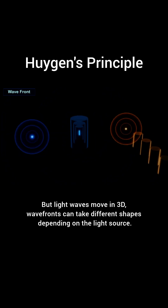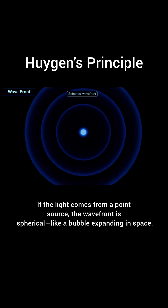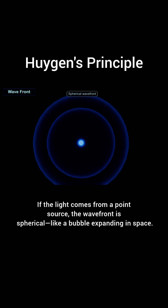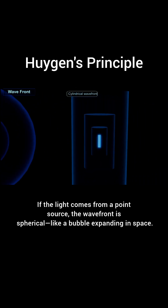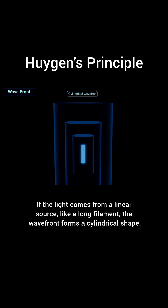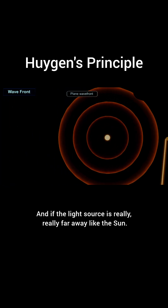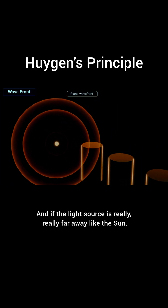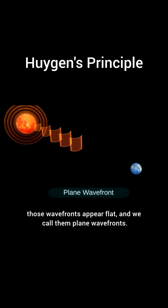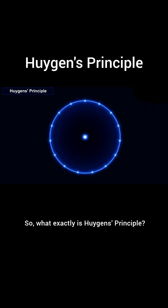Wavefronts can take different shapes depending on the light source. If the light comes from a point source, the wavefront is spherical, like a bubble expanding in space. If the light comes from a linear source, like a long filament, the wavefront forms a cylindrical shape. And if the light source is really far away, like the sun, those wavefronts appear flat, and we call them plane wavefronts.